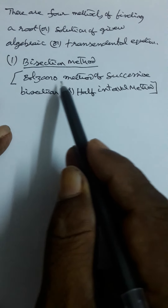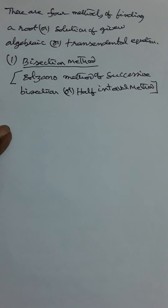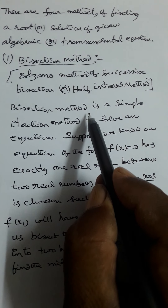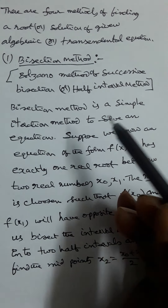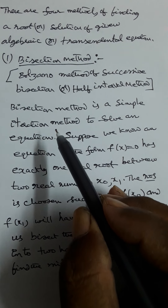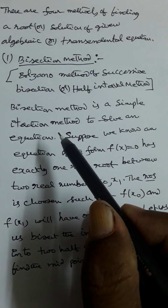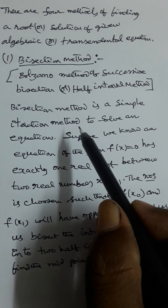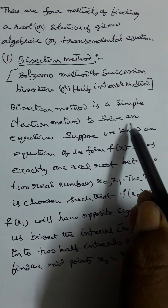There are four methods of finding a root or solution of a given algebraic or transcendental equation. The first one is the bisection method, also known as the Bolzano method, successive bisection, or half-interval method. The bisection method is a simple iteration method — iteration meaning performing the same procedure a number of times to get an approximate root of the given equation.